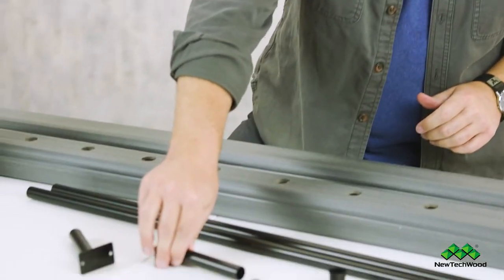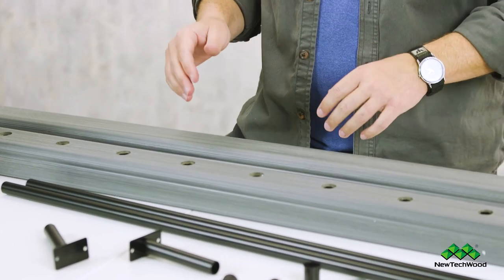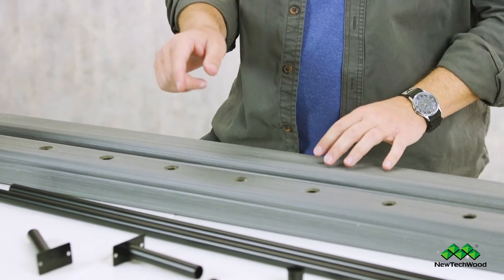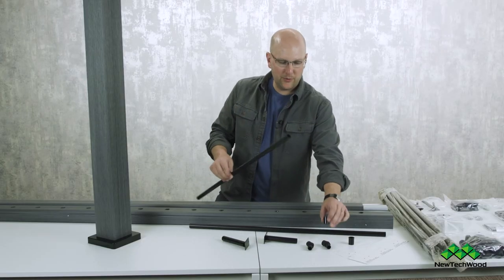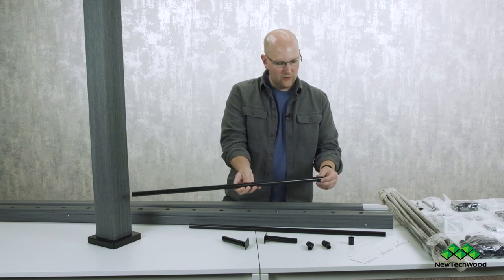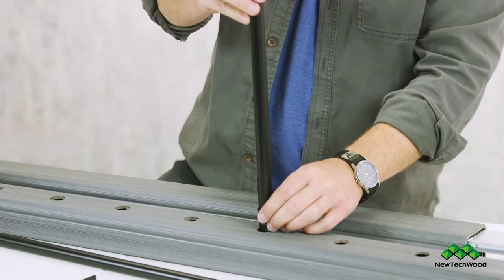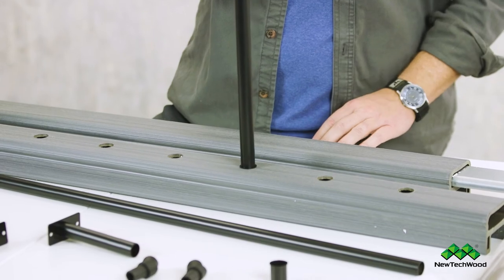The last part of this system are the balusters. Now these are powder coated aluminum and they seat into these baluster plugs. So let me show you what I'm talking about. This just slides in like this and then this goes in here and you're all set.